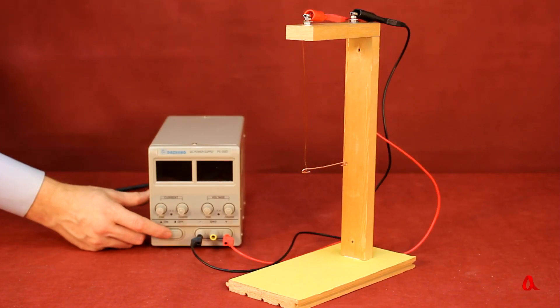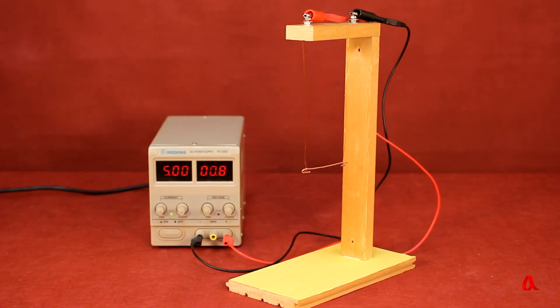We hang a piece of copper wire on two conductive suspensions, turn on the power and pass a current of 5A through this circuit.